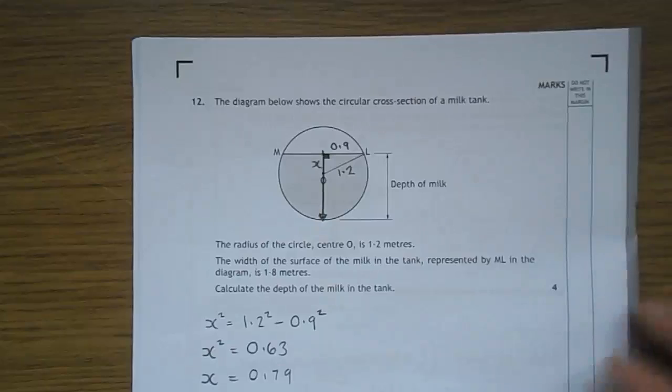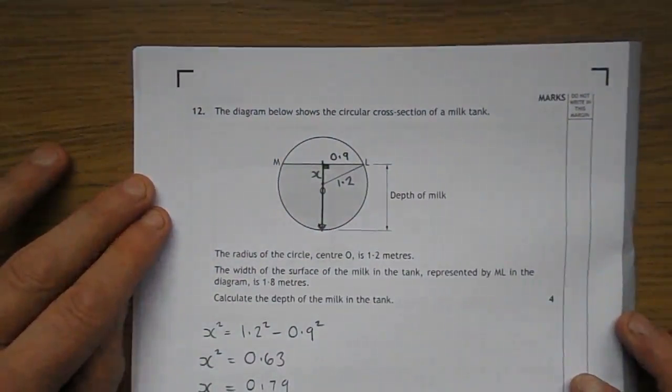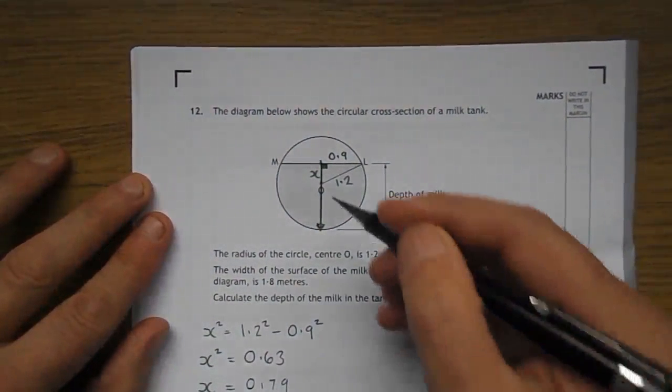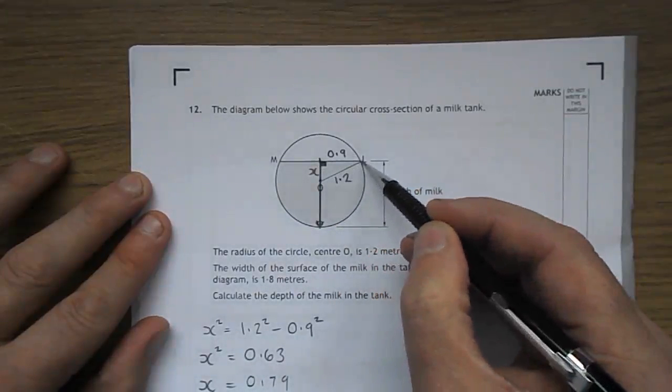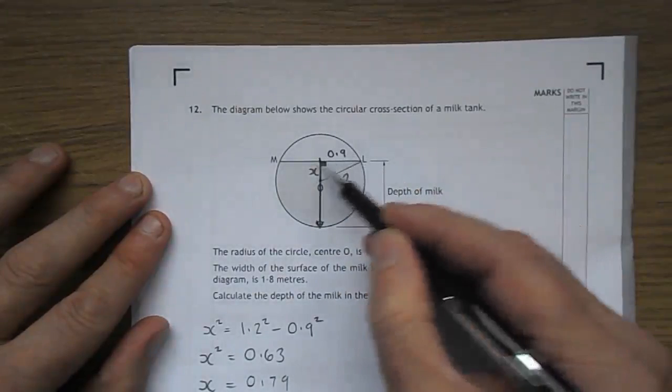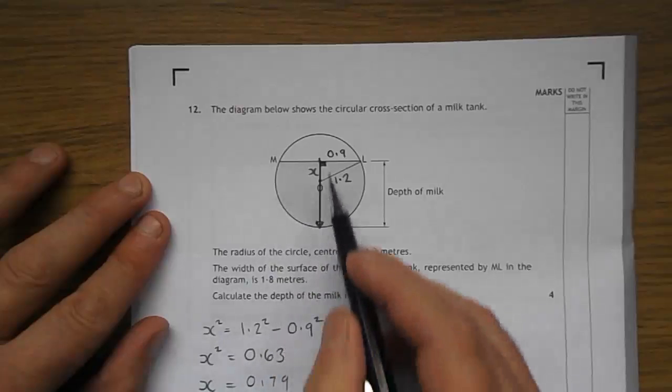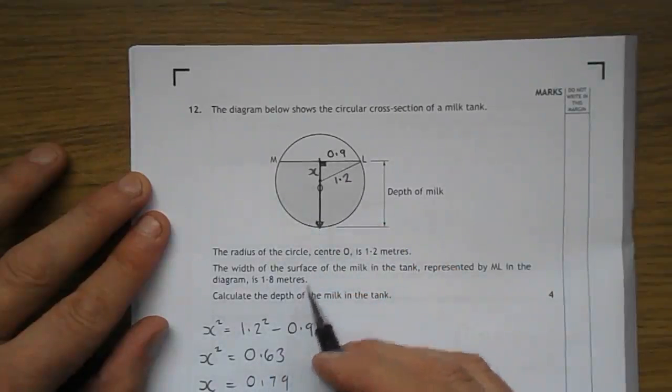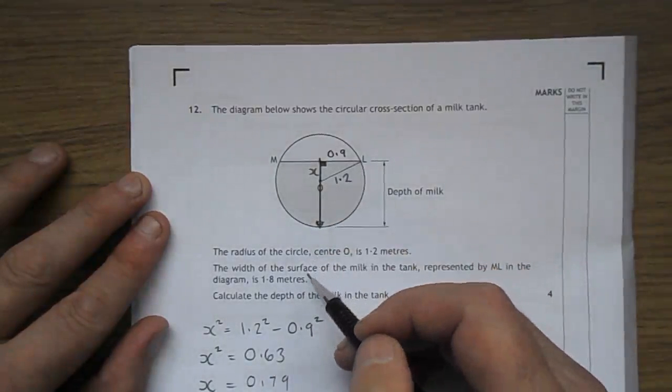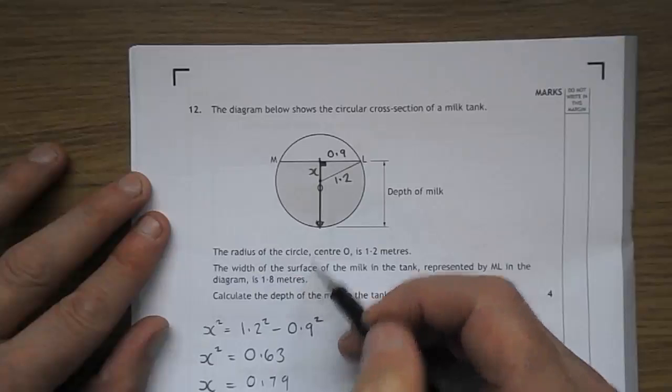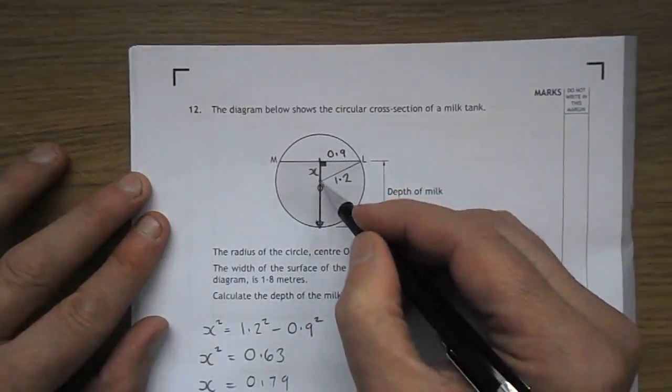Here's another one of these. Done lots of these in practice. So hopefully you manage this one here. The diagram below shows the circular cross section of a milk tank. And again, there's a line down. There's that there. You should be getting used to going from centre to there by now if you've been with me with all the practicing that we've done. The width of the surface is 1.8. So that's not 0.9. The radius is 1.2. So from the centre to the circle is 1.2. And the height or depth of water they're talking about is a radius.